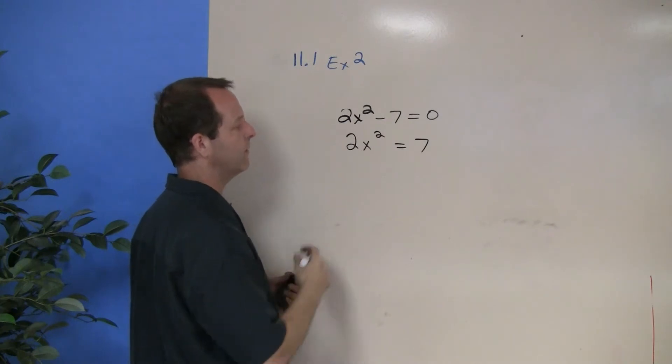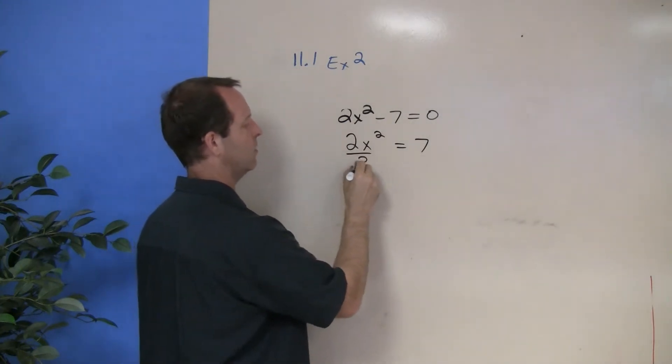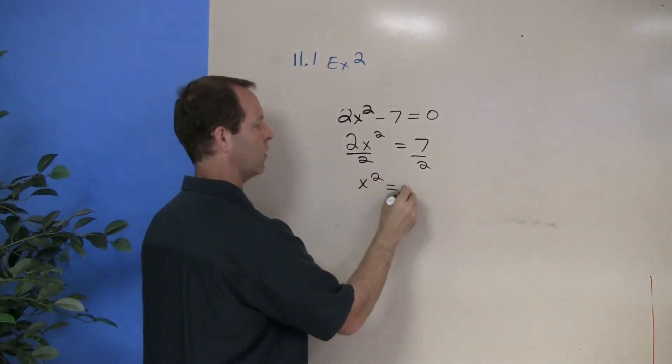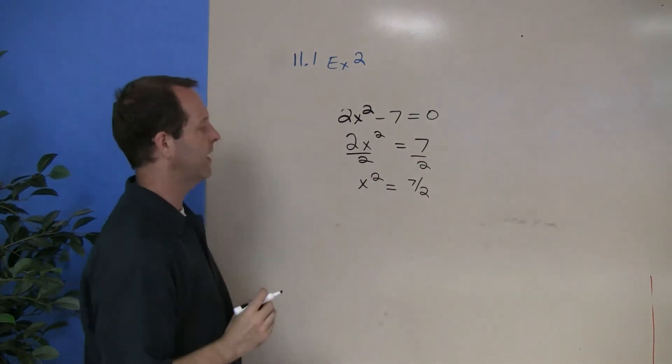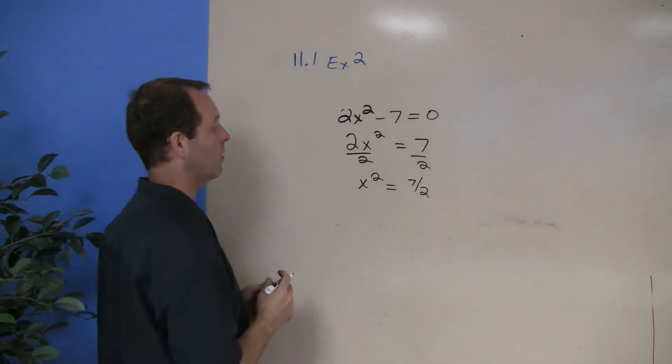2x squared equals 7, divide both sides by 2, so x squared equals 7 halves. And then to get x by itself I square root both sides.